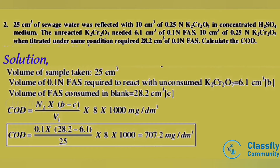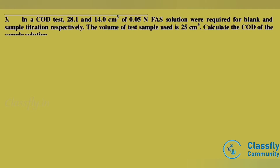Substituting the values: COD = 0.1 × (28.2 − 6.1) / 25 × 8 × 1000 = 707.2 mg per dm³.